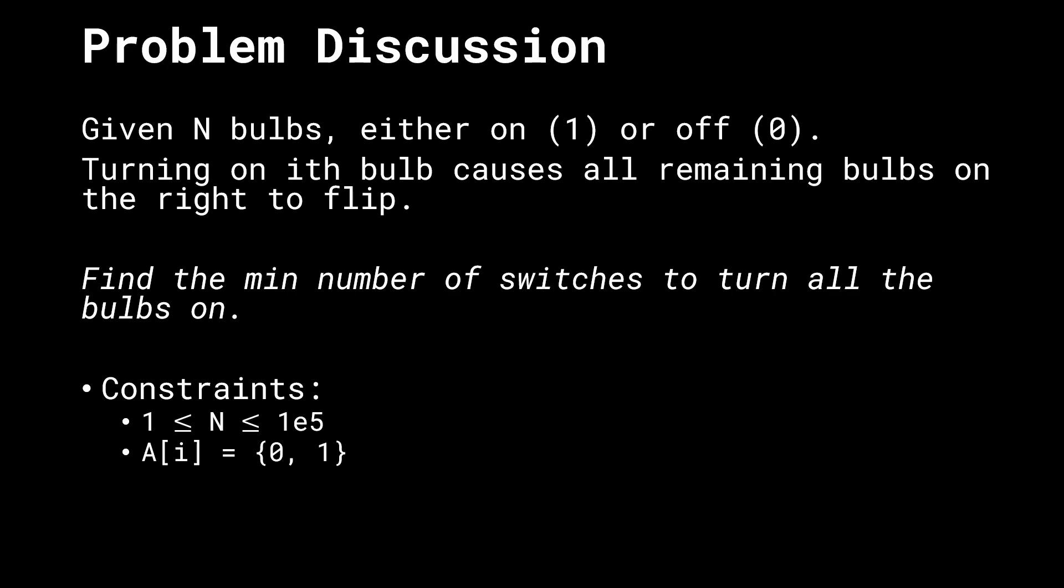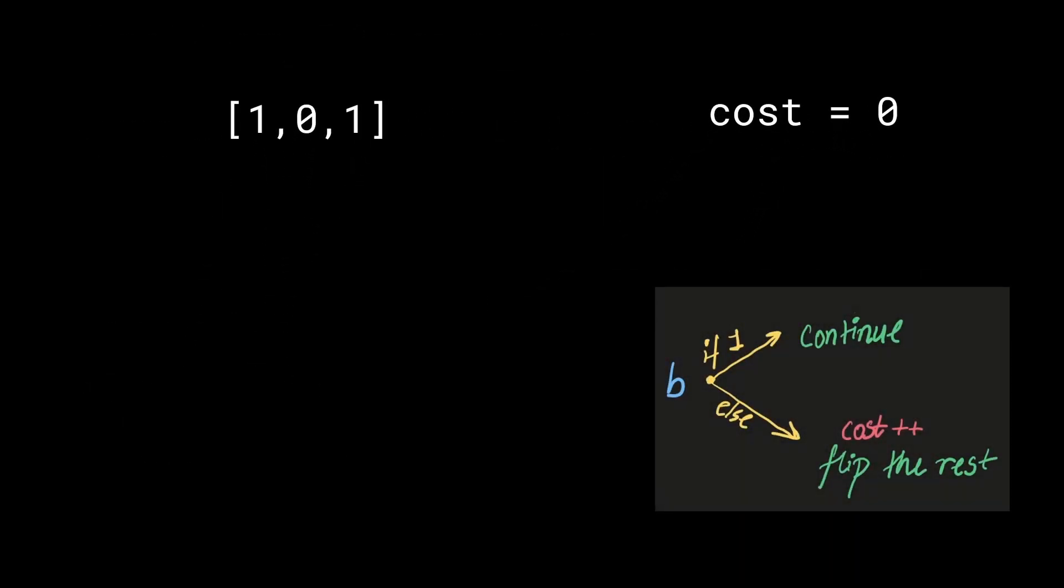The goal of this problem is to find the minimum number of switches to turn all of the bulbs on. The constraints mention that N, the number of bulbs, can be between 1 and 10 to the power 5. And A[i] can be 0 or 1, representing that the bulb or the bit we are looking at currently can either be 0 or 1. Let's take a test case and try to work out a solution. In the case of [1,0,1], this is the test case we're going to start off with.